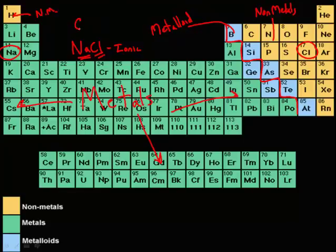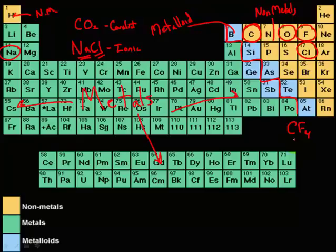Now, CO2 is actually a covalent compound. Carbon and oxygen are both located on the non-metal side of the staircase. All covalent compounds are composed of non-metals. Another good example would be CF4, carbon tetrafluoride — carbon is located here and the fluorines are located here. If we look at Br2, bromine is also a covalent compound. All the elements making up covalent bonds are located on the non-metal side of the staircase, including hydrogen on the other side.